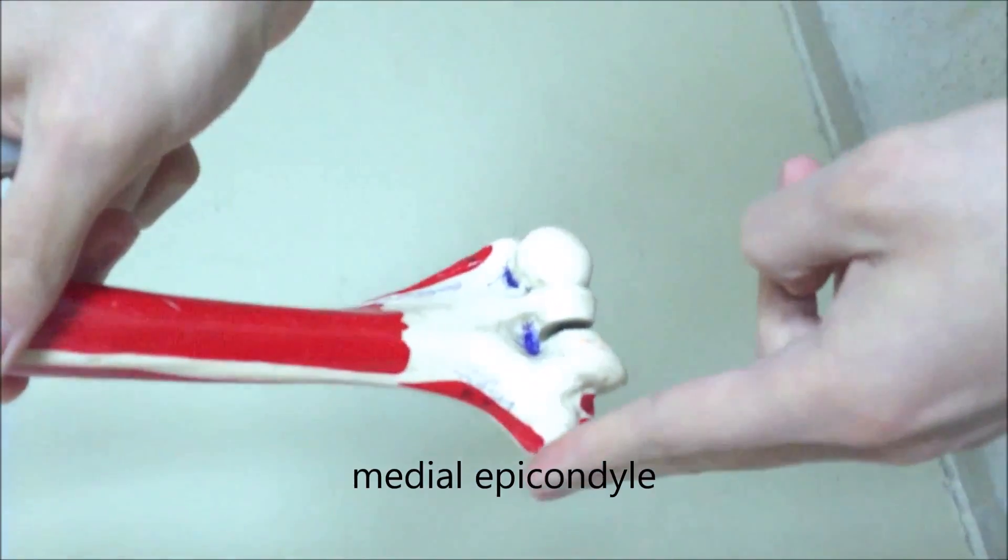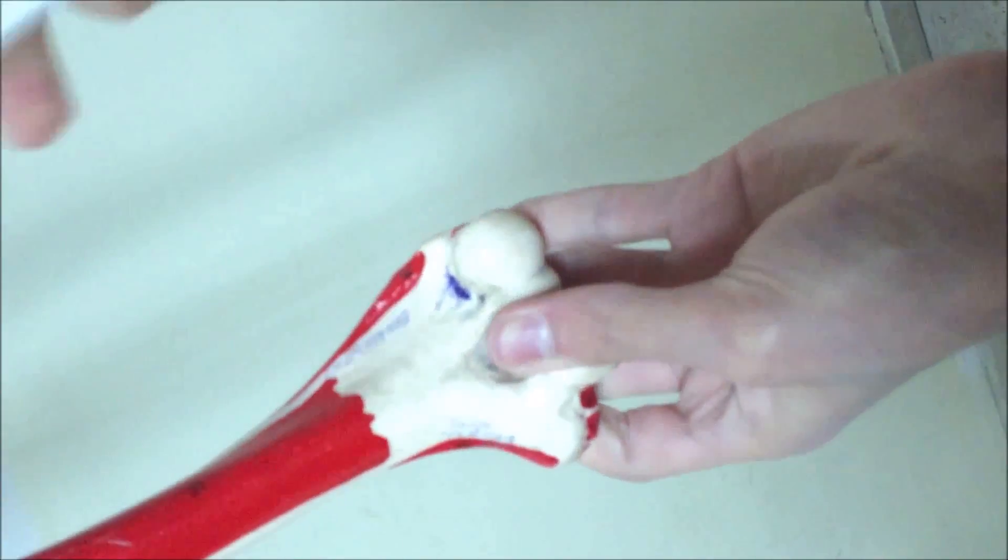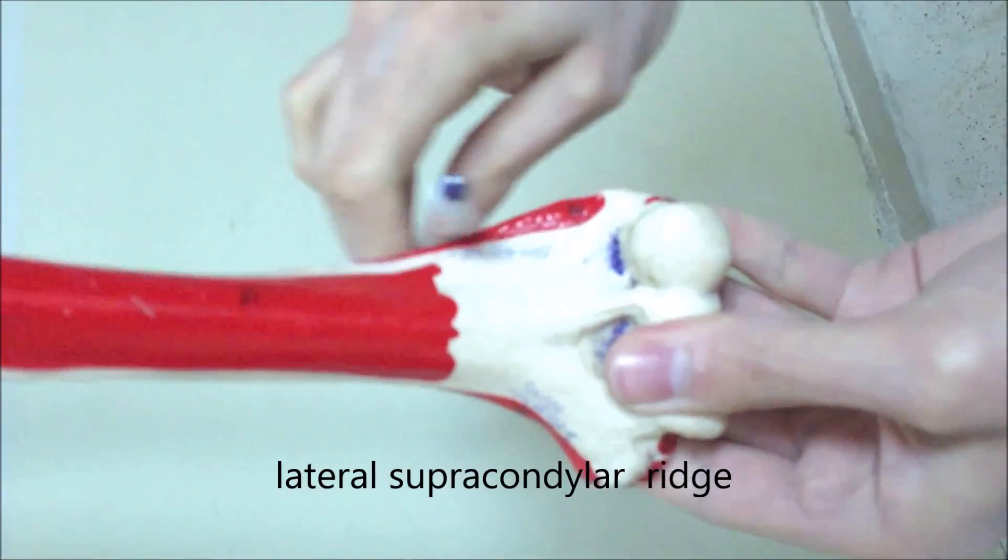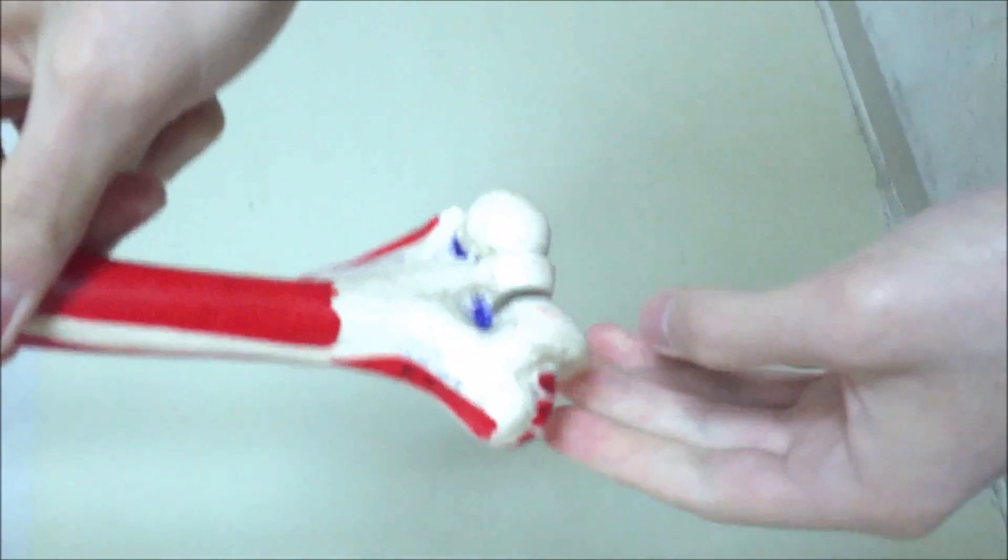This is the medial epicondyle and lateral epicondyle of the humerus. Medial supracondylar ridge. Lateral supracondylar ridge of the humerus. We've got some origins here.